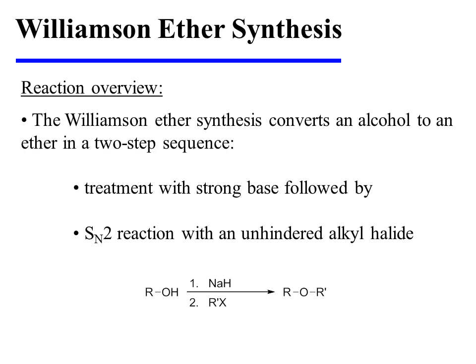The Williamson ether synthesis converts an alcohol to an ether via a two-step process. The first step involves treatment with a strong base, and the second step involves an SN2 reaction with an unhindered alkyl halide.